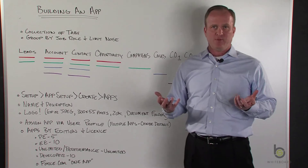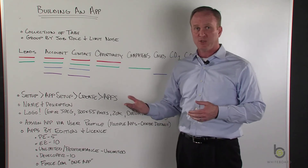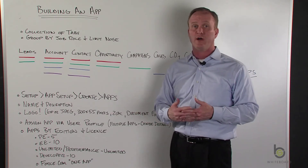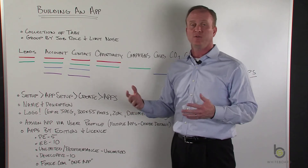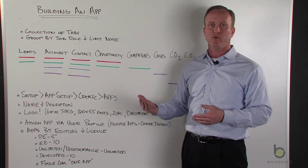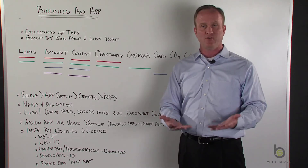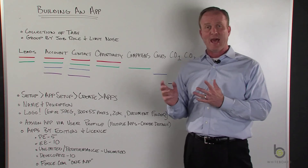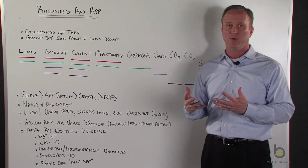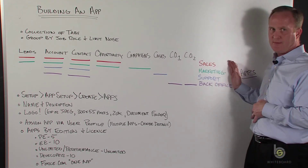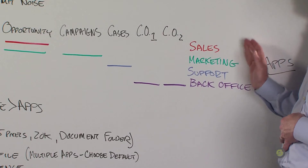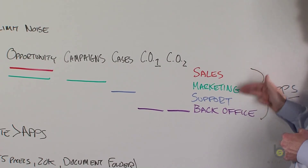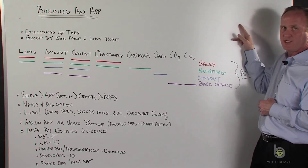You assign apps to your users by their profile. If you have a sales profile, you may want them to have access to the sales app. Some super users — like a system administrator, VP of sales, or VP — might have access to multiple apps. So on a given profile, you can have one or many apps assigned. If a user has access to more than one app, they'll be able to choose from those apps on the top right corner by pulling down a selector to switch between groupings of tabs.